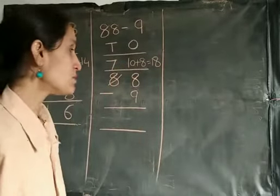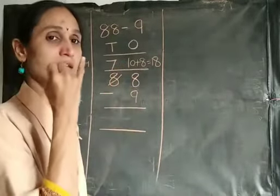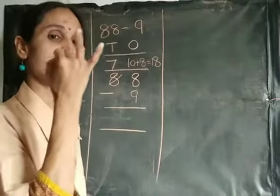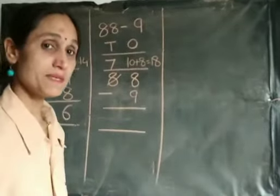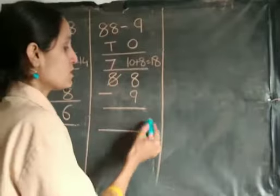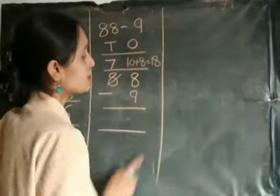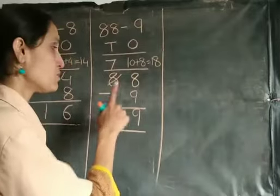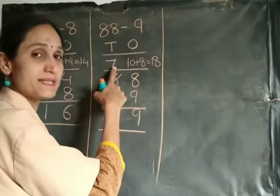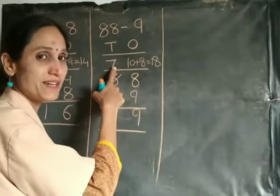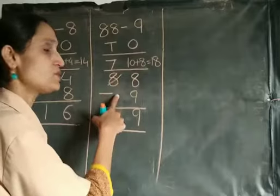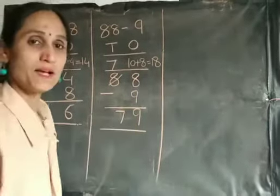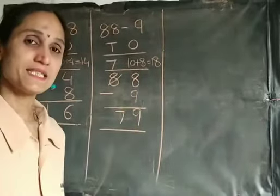Count from 9 to 18: 10, 11, 12, 13, 14, 15, 16, 17, 18 — that's 9. So write down 9 in the 1s column. Now go to the 10s column. Consider 7 here instead of 8. 7 minus no number means 0, so 7 minus 0 is 7. So the answer is 79.